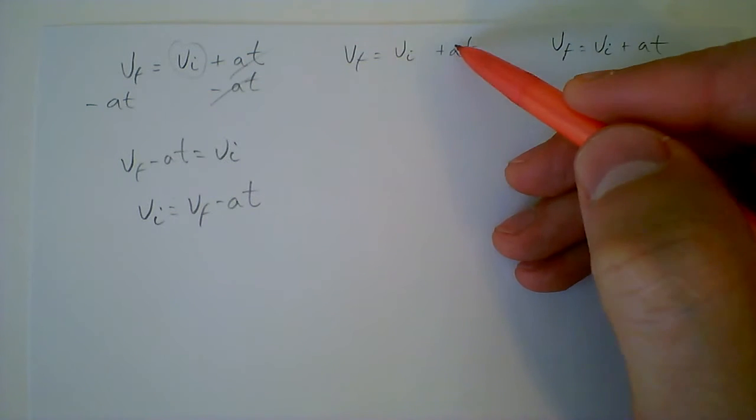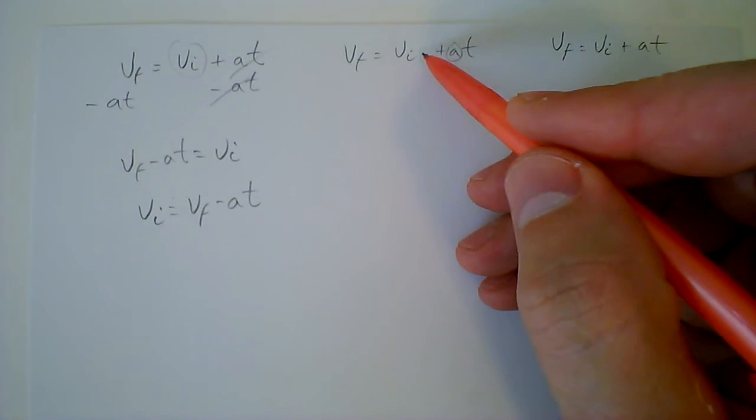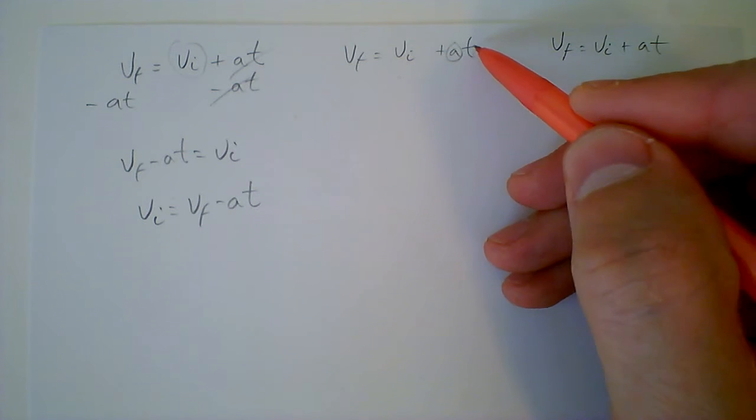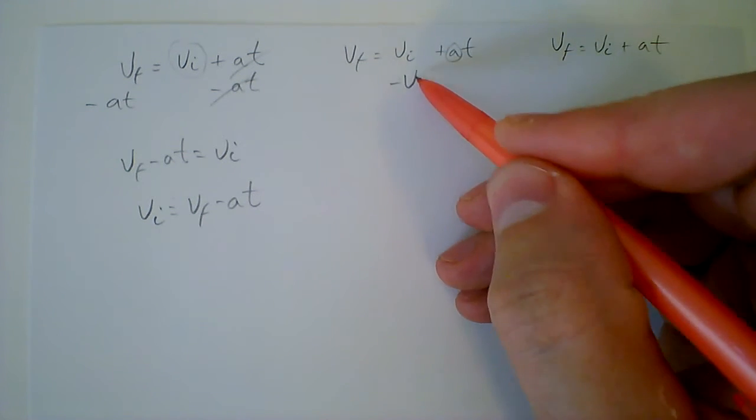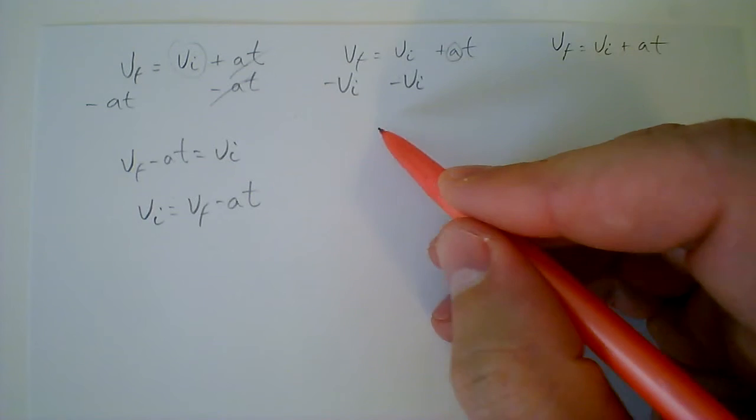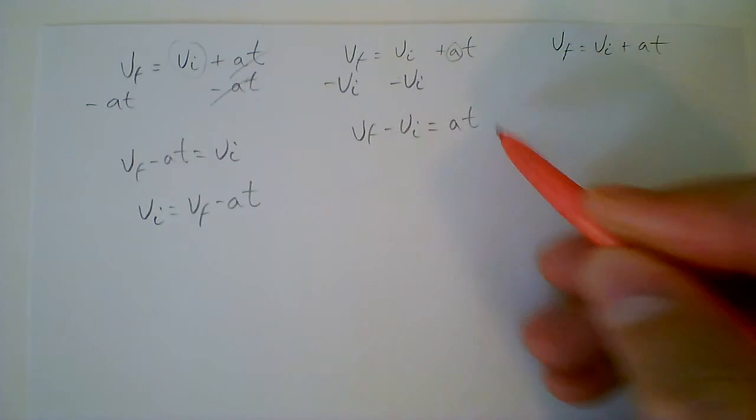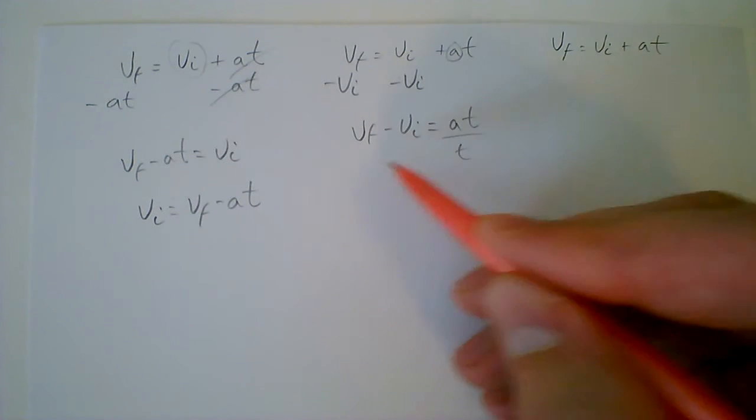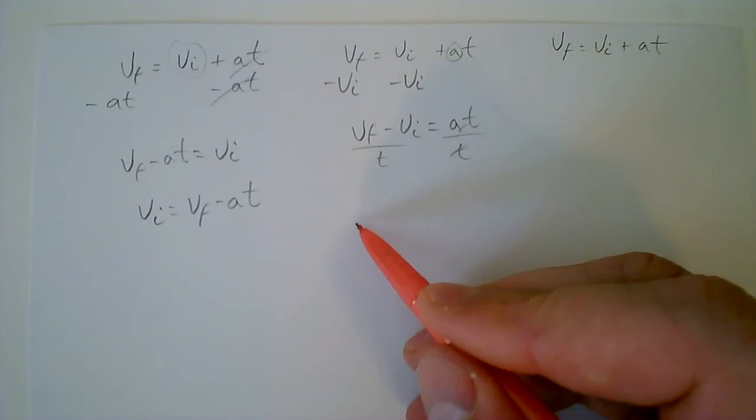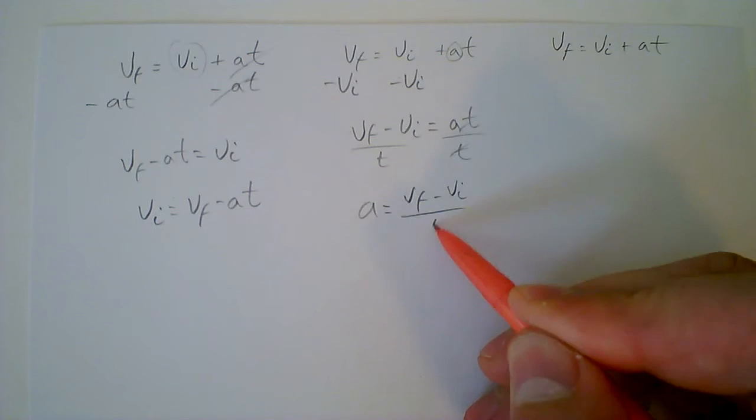To rearrange the equation for A, you first of all have to get rid of what's added or subtracted before you get rid of the T. So subtract VI from both sides, and at that point in time you have VF minus VI equals AT. And then you just have to get rid of the T by dividing out the T. So you end up getting A equals VF minus VI over T.